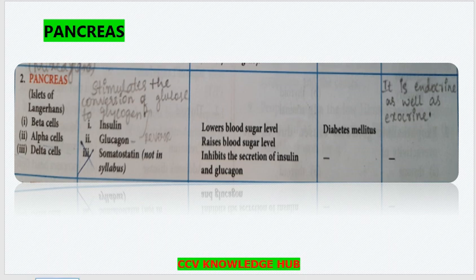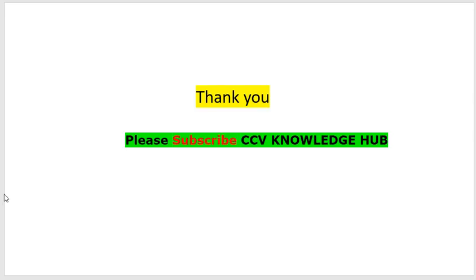So, these are the four main principal endocrine glands which we discussed. If you like this video, please subscribe to CCV Knowledge Chef. Thank you.